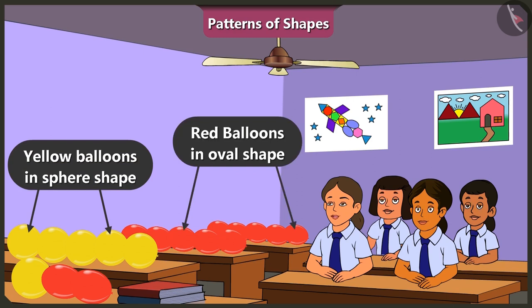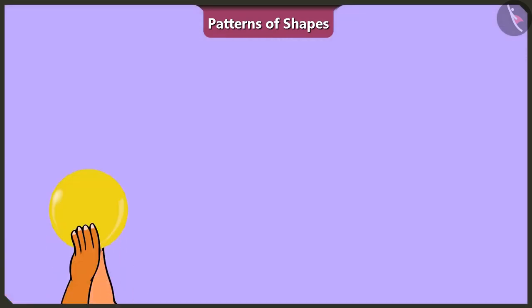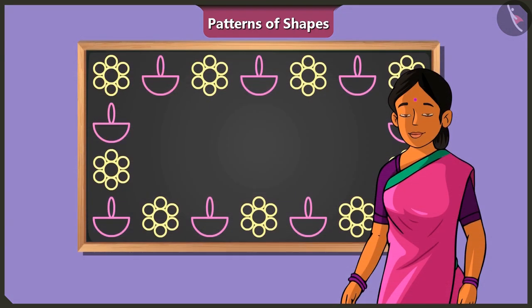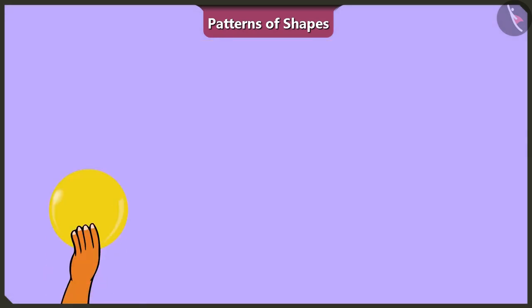Binny, let's create a special pattern out of these. Yes. Let's put one yellow spherical balloon and one red oval balloon like this. Binny, red sphere shaped balloons are more in number. You could make a pattern with one yellow sphere shaped balloon followed by two red oval balloons. I feel that will look more beautiful. Okay. One yellow spherical balloon. Then, two red oval shaped balloons.